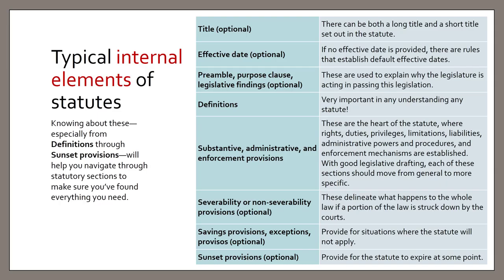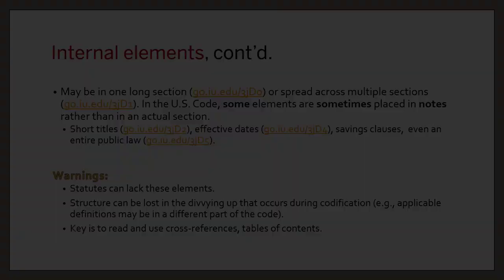Most statutes typically have certain features such as statements of purpose, definitions, substantive provisions, enforcement provisions, and other internal elements. These elements are often in different sections, both in the Act itself and in the statutory code, in order to create an organizational structure. This means that when you find one section — say the substantive provisions — you need to look for the other sections like definitions and enforcement provisions to get complete information about the law.